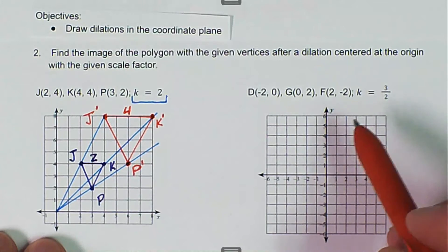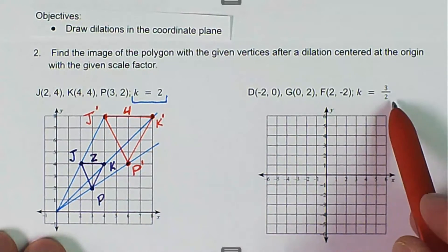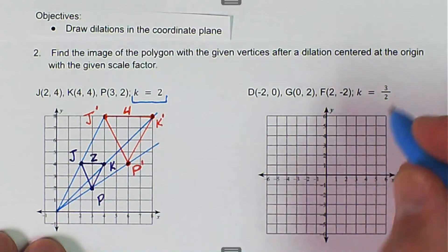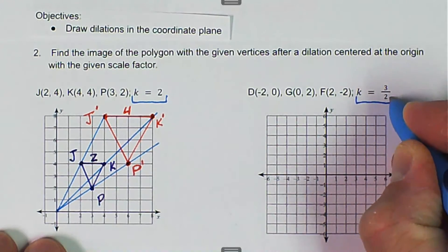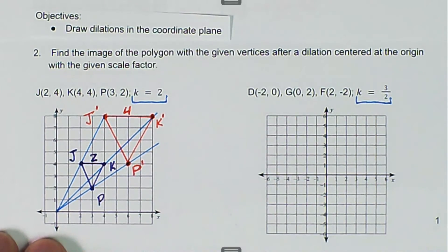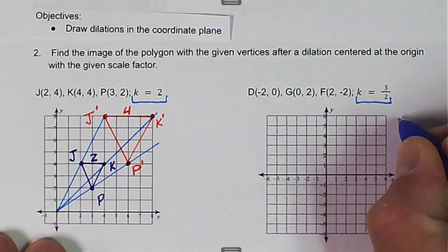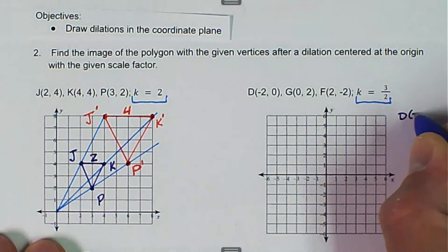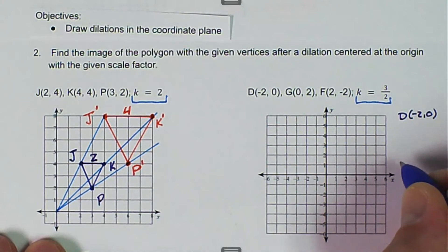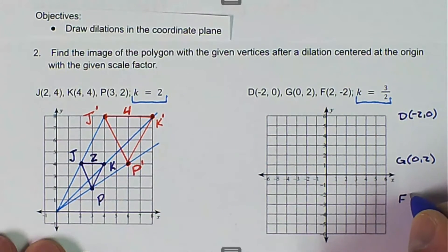Then we have an example where we're given a scale factor of 3 halves. And so for this one, I'm not going to draw my line. I'm going to show how to do this just by simply doing the multiplication. So the points of D is negative 2 comma 0. We have G is 0 comma 2. And we have F is 2 comma negative 2.